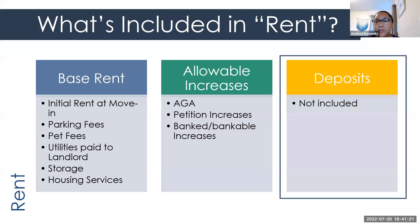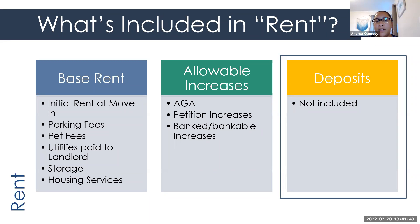Allowed rent increases would be what we call the AGA, which stands for annual general adjustment — that's the rent increase that is allowed for that year. We also have landlord petitions where they can petition the city to get a higher rent increase for the rental unit above what's allowed for that year. And then there's something more common called a banked rent increase, which we're going to talk about in just a second.